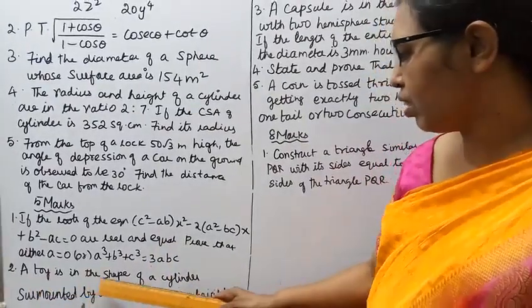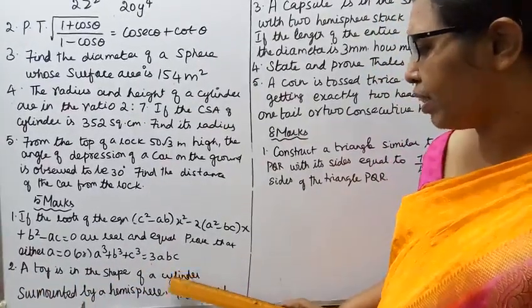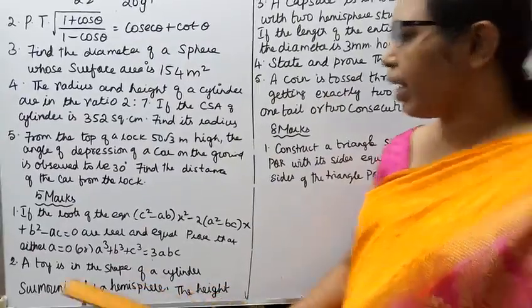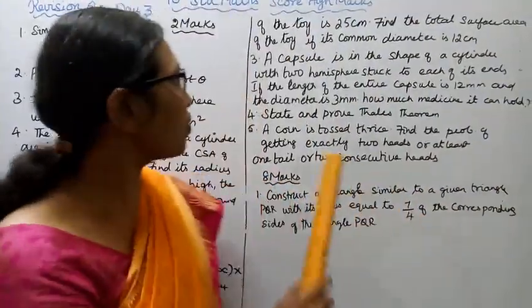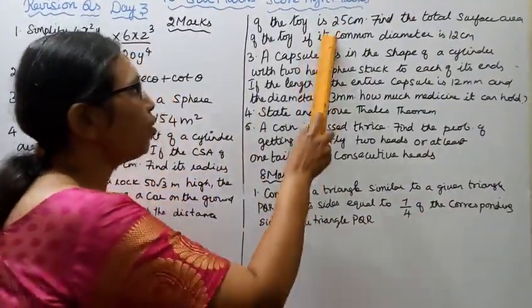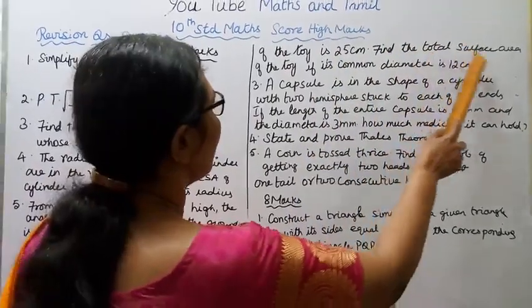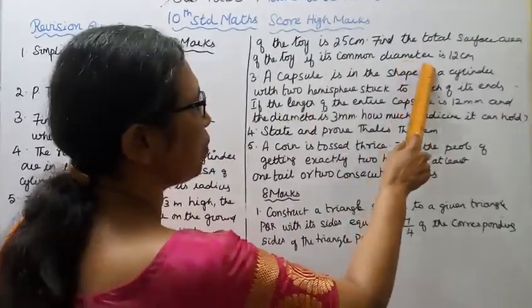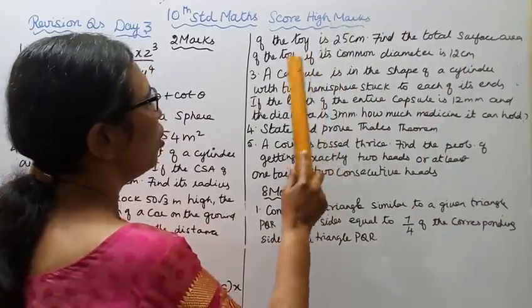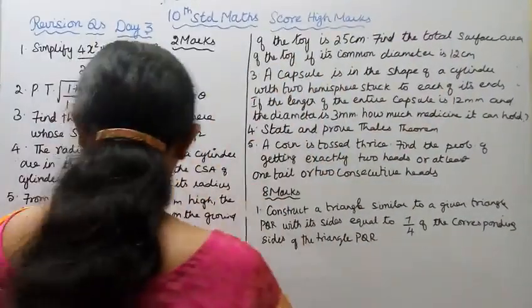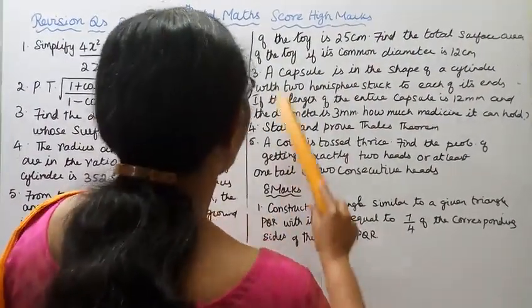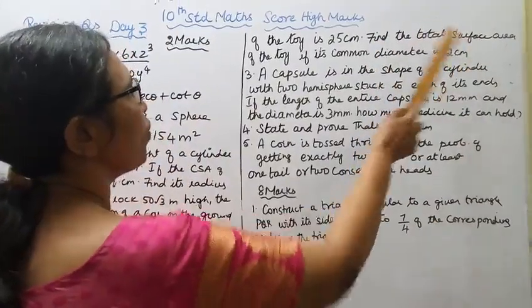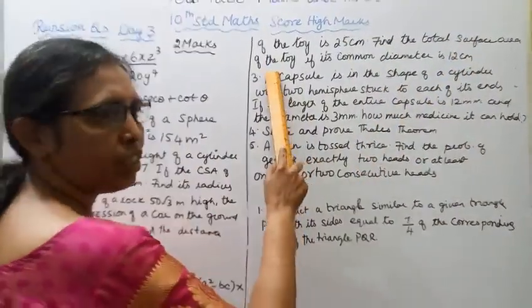Second, a toy is in the shape of a cylinder surmounted by a hemisphere. The height of the toy is 25 centimeters and the common diameter is 12 centimeters. Find the total surface area of the toy.